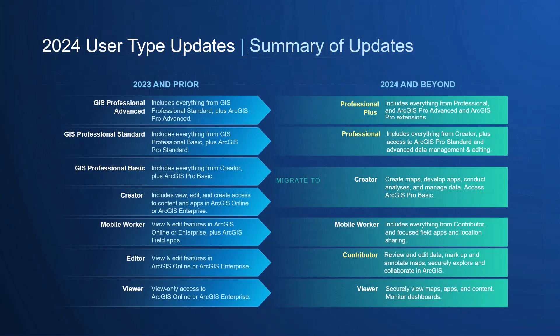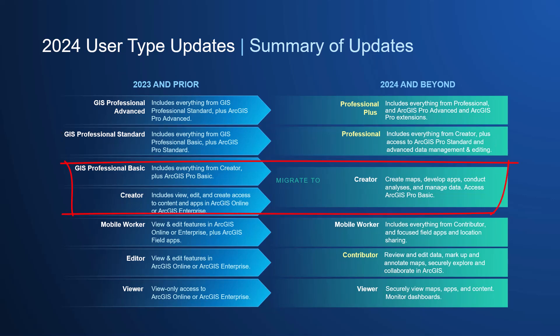There are a few main differences from before, which I have compiled in this slide here. As you can see, GIS professional advanced changed to professional plus, and GIS professional standard changed to professional. Then GIS professional basic merged with creator and became one user type known as creator. And finally, editor changed names to contributor.